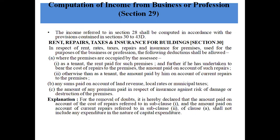What are the business and profession related incomes? Basically, income referred to in Section 28 shall be computed in accordance with the provisions contained in Sections 30 to 43D. Under Section 30, for rent, rates, taxes, repair and insurance of premises used for the purpose of business or profession, the following deductions shall be allowed.